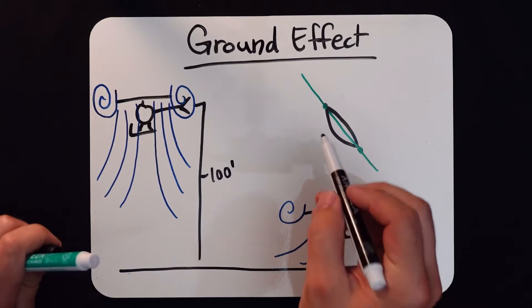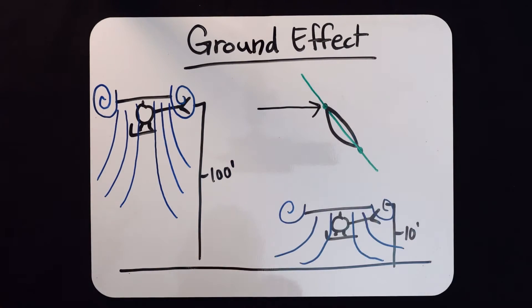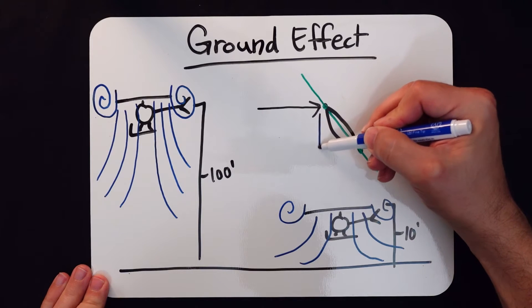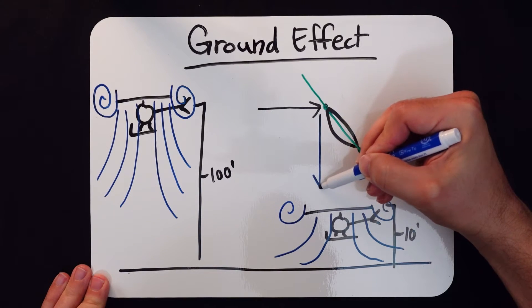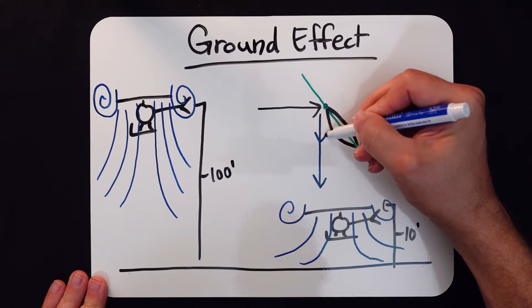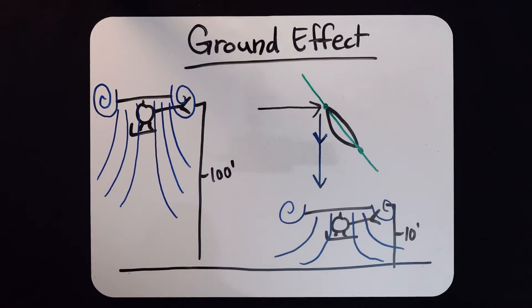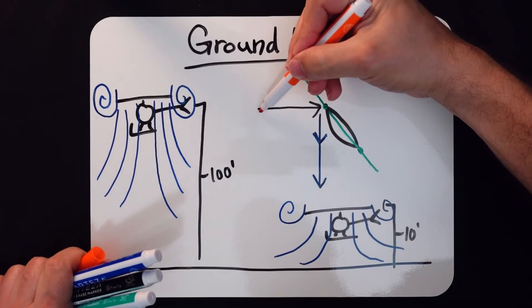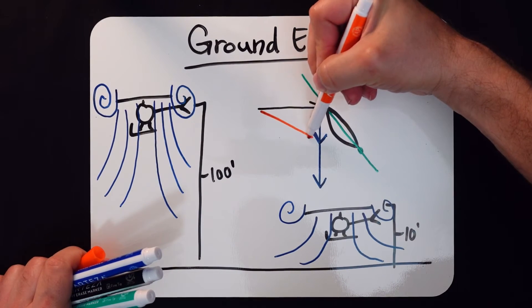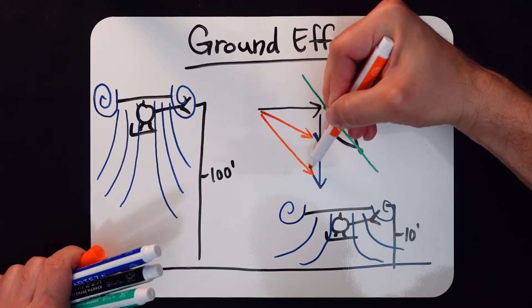And let's compare the resultant relative wind across these two. So we have a given rotational relative wind, and in this case we'll have two induced flow lines. I'm going to draw one large induced flow for the out of ground effect, and we'll have a smaller induced flow for the in ground effect helicopter. Now, obviously the vectors here for in ground effect for resultant relative wind will be much shallower than the vectors here for the out of ground effect.